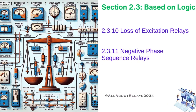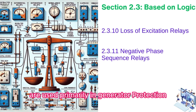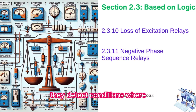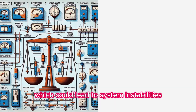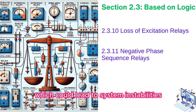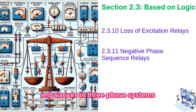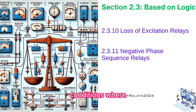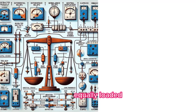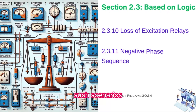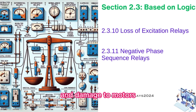Loss of excitation relays are used primarily in generator protection. They detect conditions where the generator loses its magnetic field, which could lead to system instabilities. Negative phase sequence relays identify imbalances in three-phase systems, specifically conditions where the phases are not equally loaded. Such scenarios can lead to overheating and damage to motors and generators.